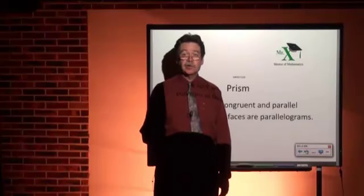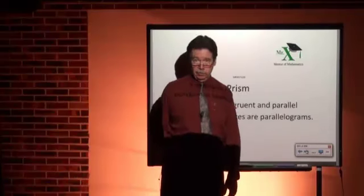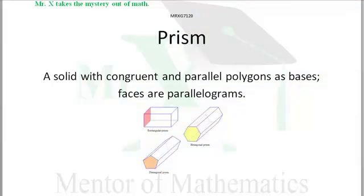Hi, Mr. X with glossary term: prism. A solid with congruent and parallel polygons as bases, and the faces between the bases are parallelograms.